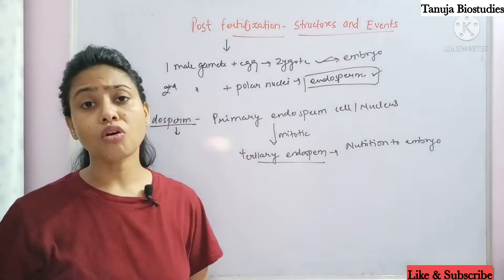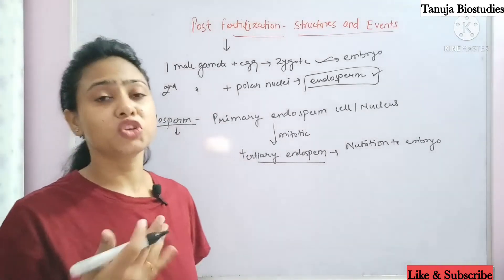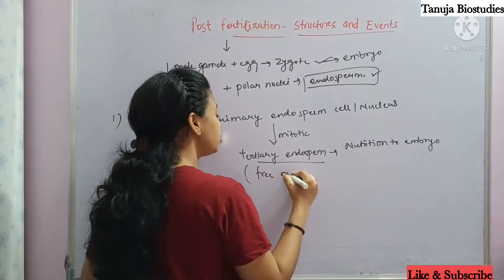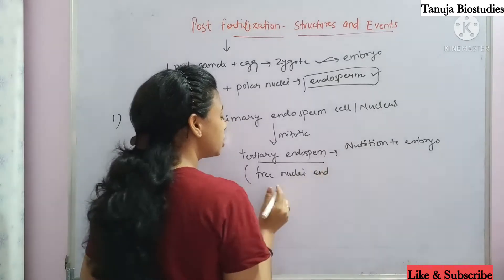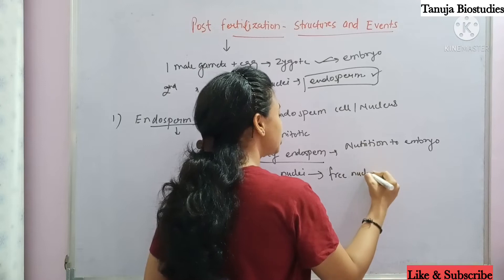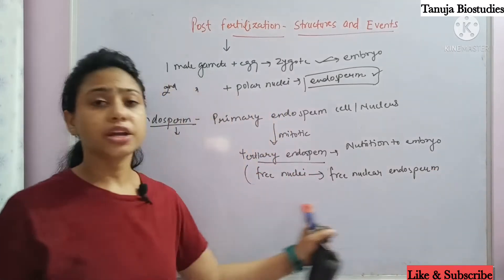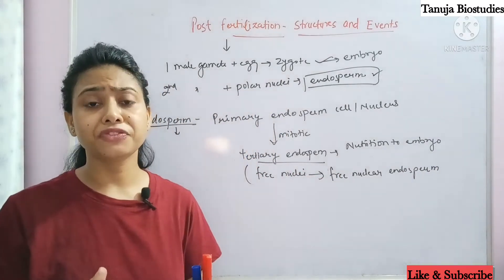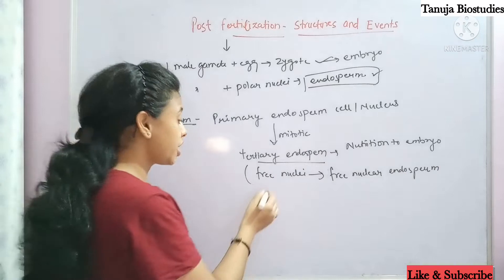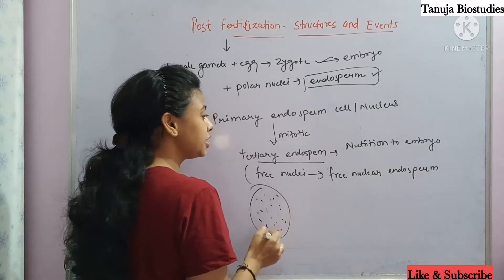So what does the endosperm do? It works to provide nutrition to the embryo. Initially, the endosperm is called the free nuclear endosperm. In free nuclear endosperm, there is a large amount of division — but it's not cytokinesis; it only undergoes karyokinesis. So the cell forms a large number of nuclei, which is called the free nuclear endosperm.